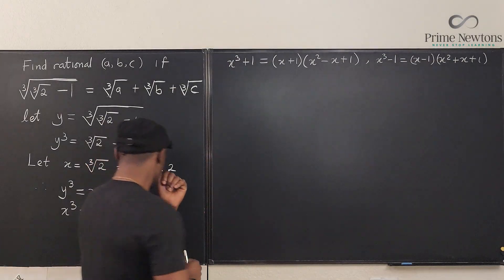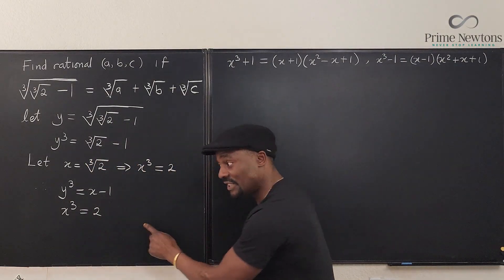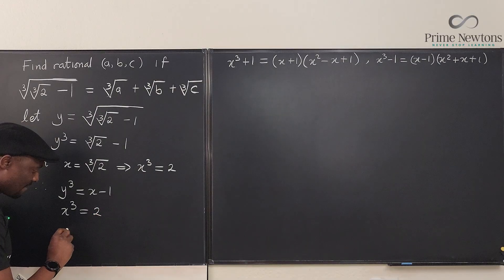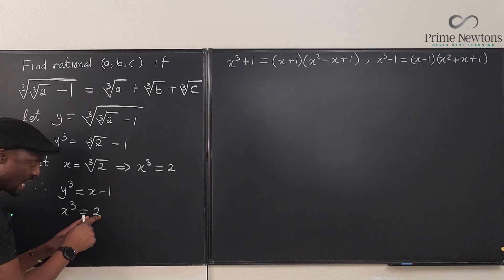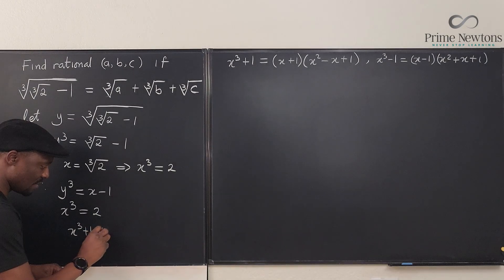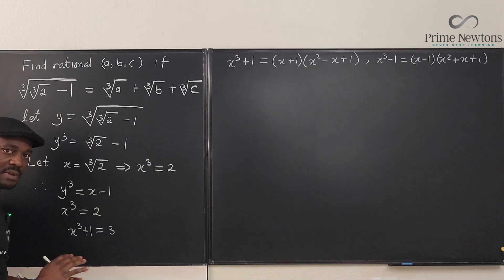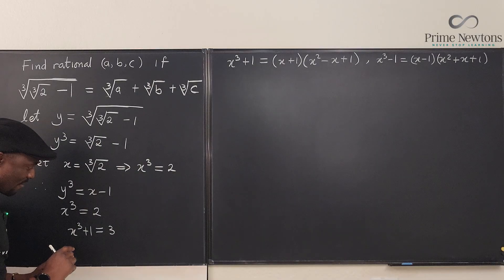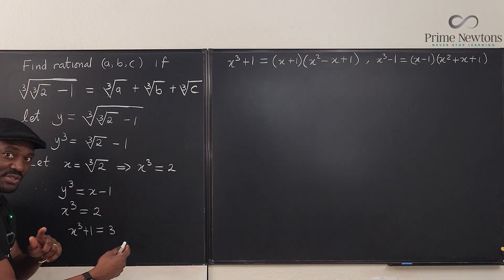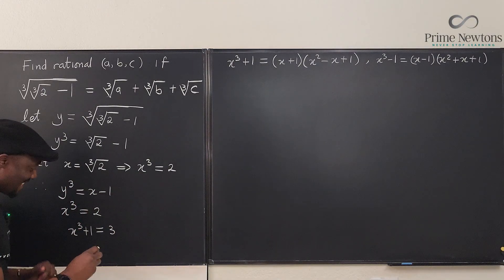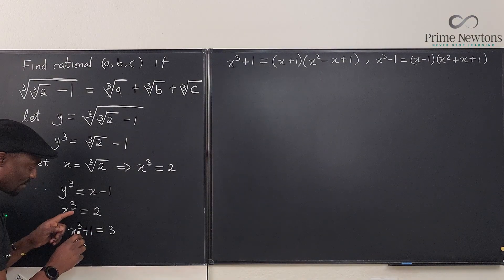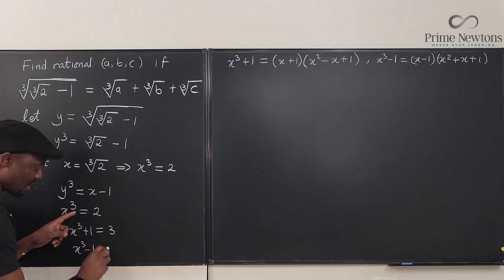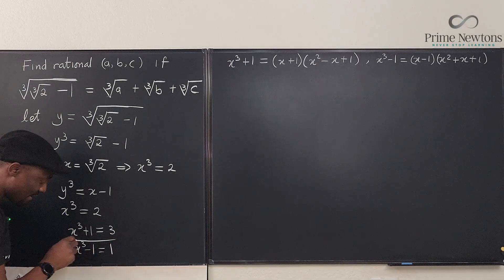From our key equations we can generate two useful results. Since x³ = 2, if I add 1: x³ + 1 = 3. And if I subtract 1: x³ − 1 = 1. These are going to transform what I'm about to do next.